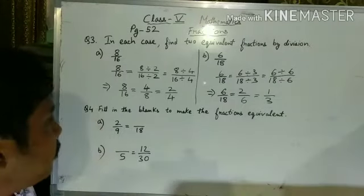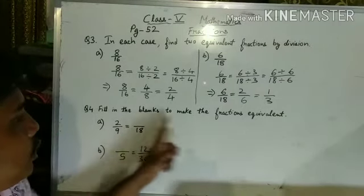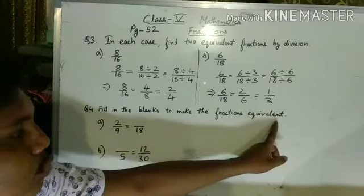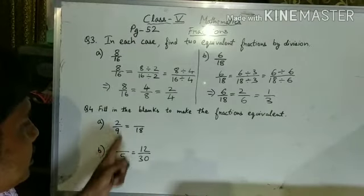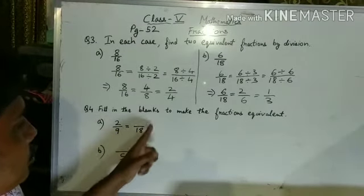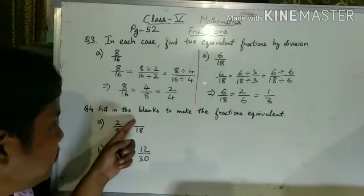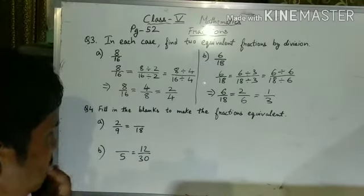Let's come to our next question. Question number 4. Fill in the blanks to make the fraction equivalent. So, this fraction has to be equivalent to a fraction and this one is blank. We have to fill up this blank. So, how to do this?